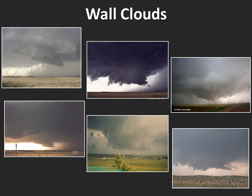Wall clouds take on many shapes and sizes, and what they look like will depend on a lot of factors, including the size of the storm, the humidity, how much instability there is, your distance from the wall cloud, the time of day, and other factors. They're often described as blocky with sharply defined edges, but this is not always the case.